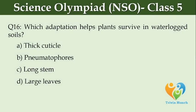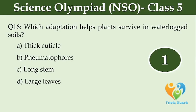Which adaptation helps plants survive in waterlogged soils? Option A: thick cuticle, Option B: pneumatophores, Option C: long stem, Option D: large leaves.